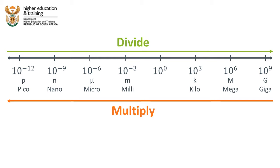The number line works by starting on the far left with the smallest unit: pico, which is 10 to the negative 12; nano, 10 to the negative 9; micro, 10 to the negative 6; milli, 10 to the negative 3. Here is the centre point. Then kilo, 10 to the positive 3; mega, 10 to the 6; giga, 10 to the 9. So kilo is 1000 times, mega is 1 million times, giga is 1 billion times. Milli is 1 thousandth, micro is 1 millionth, nano is 1 billionth, and pico is 1 trillionth.